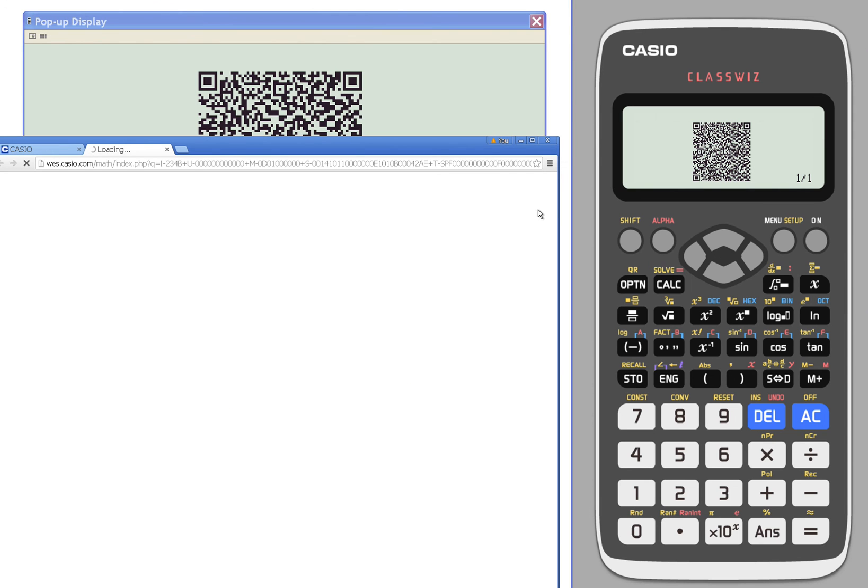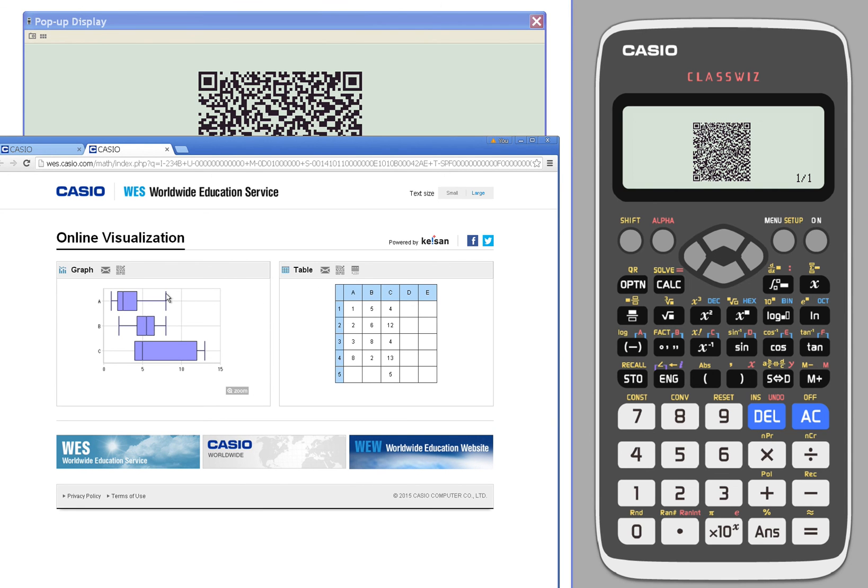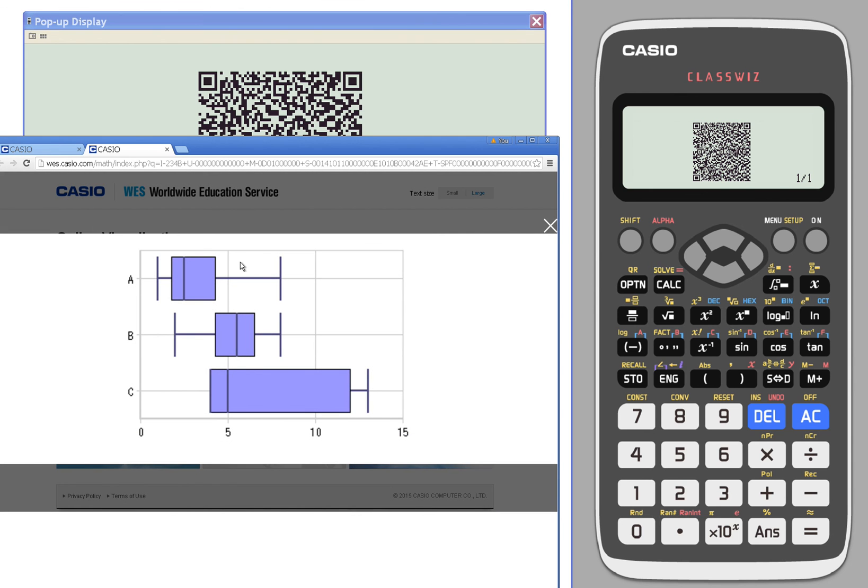When I generate my QR code, it will give me a box and whiskers plot for each one. You can copy and paste those, zoom in.